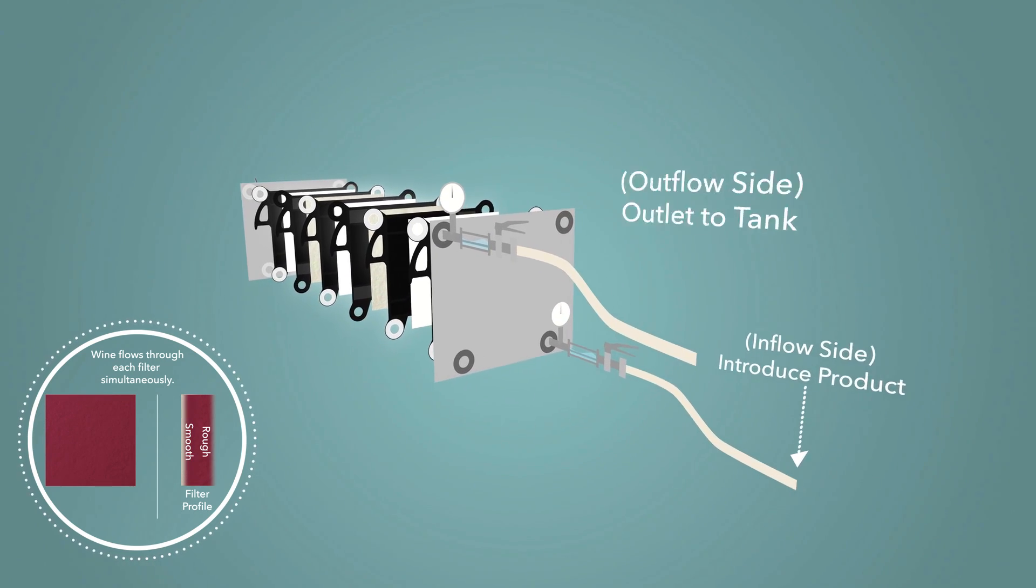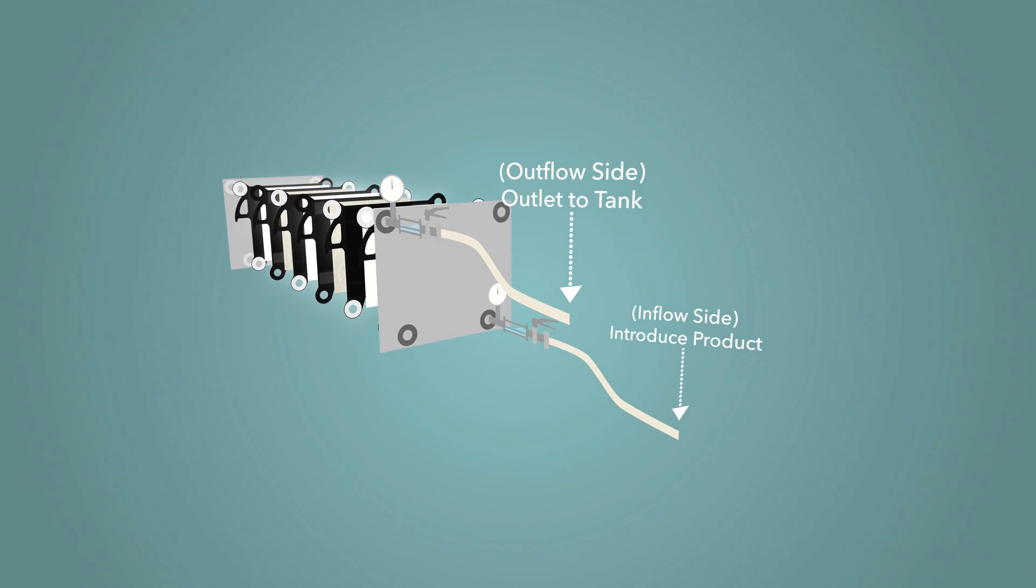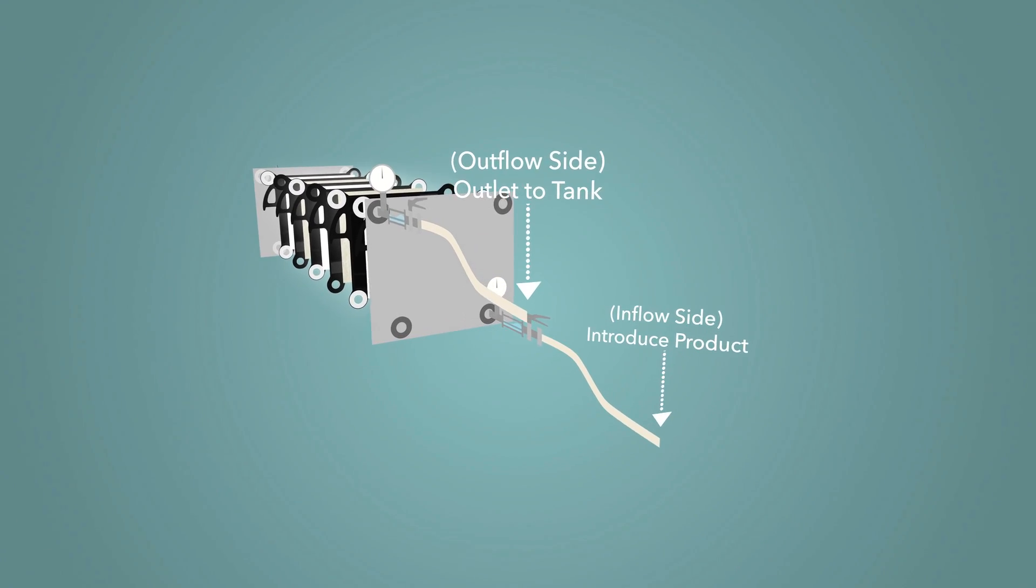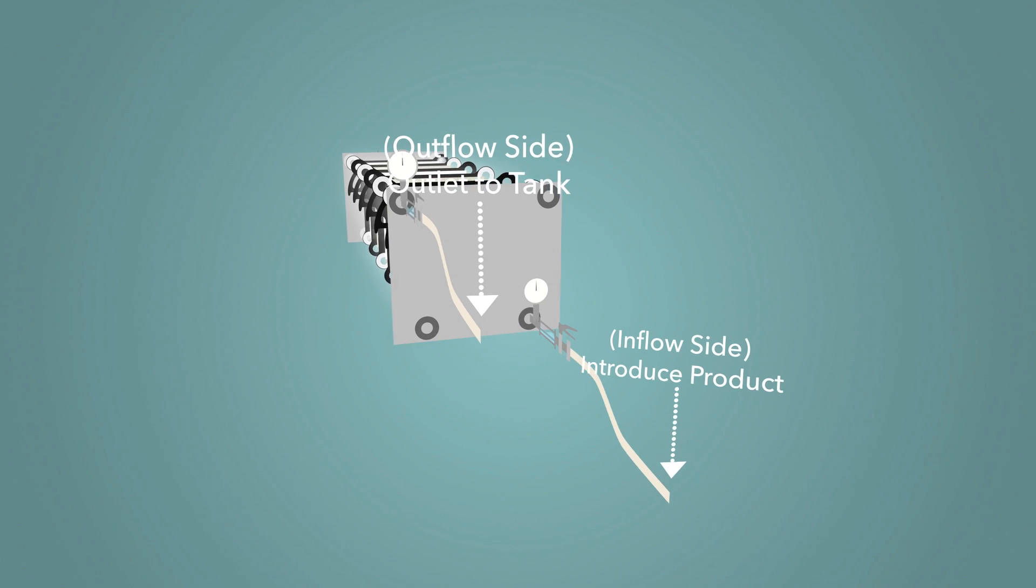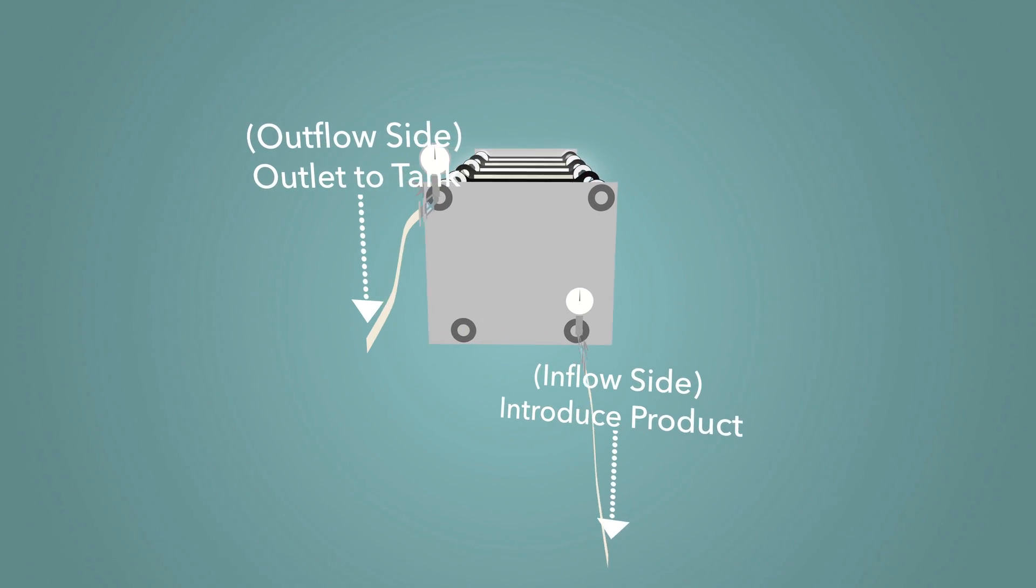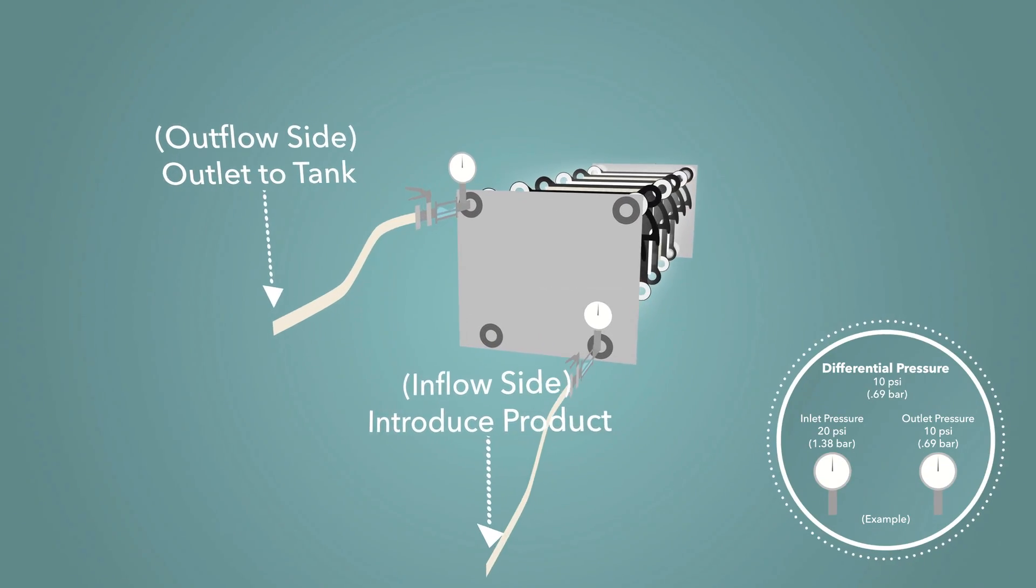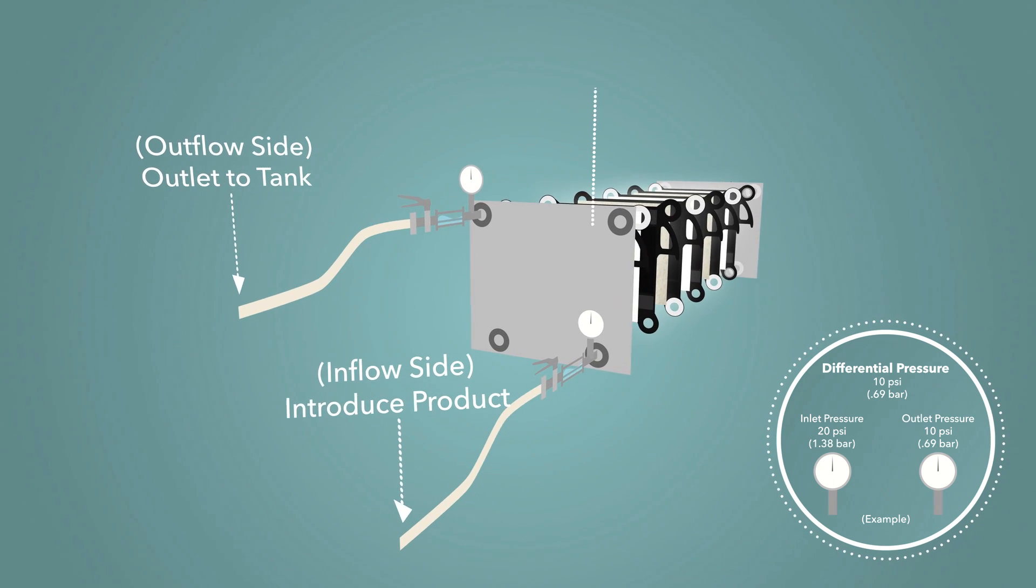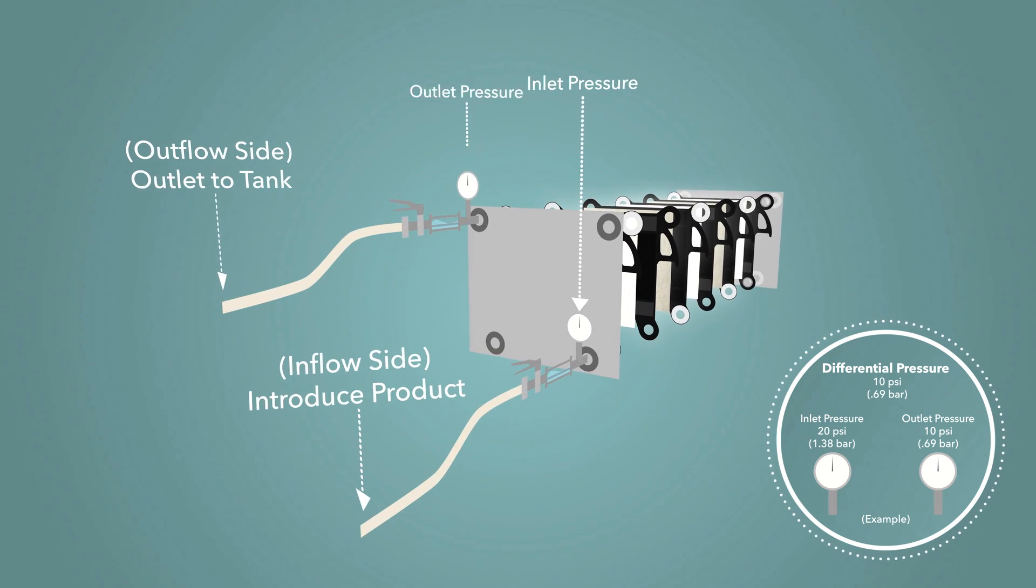Close the drain and open outlet to destination tank. Common initial differential pressure will begin at 5-8 psi or roughly 0.5 bar. Differential pressure is calculated by the difference between the inlet pressure and the outlet pressure.